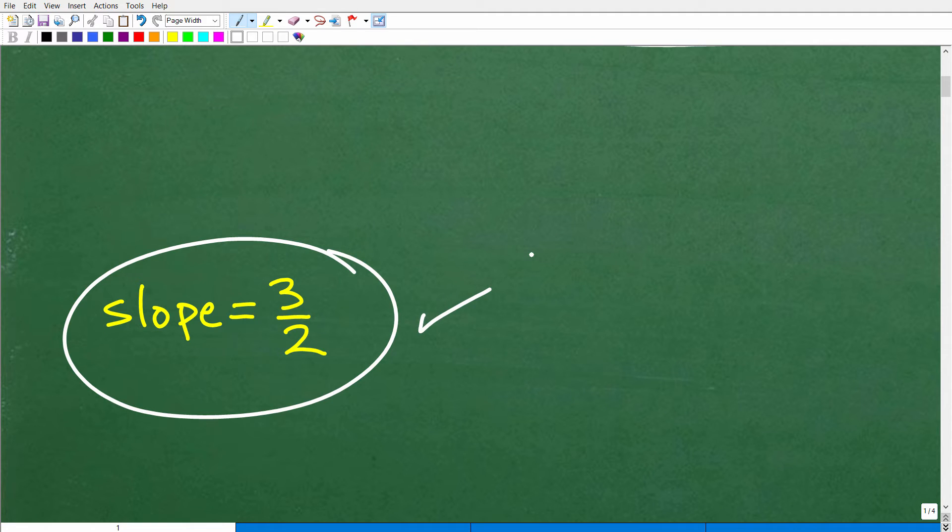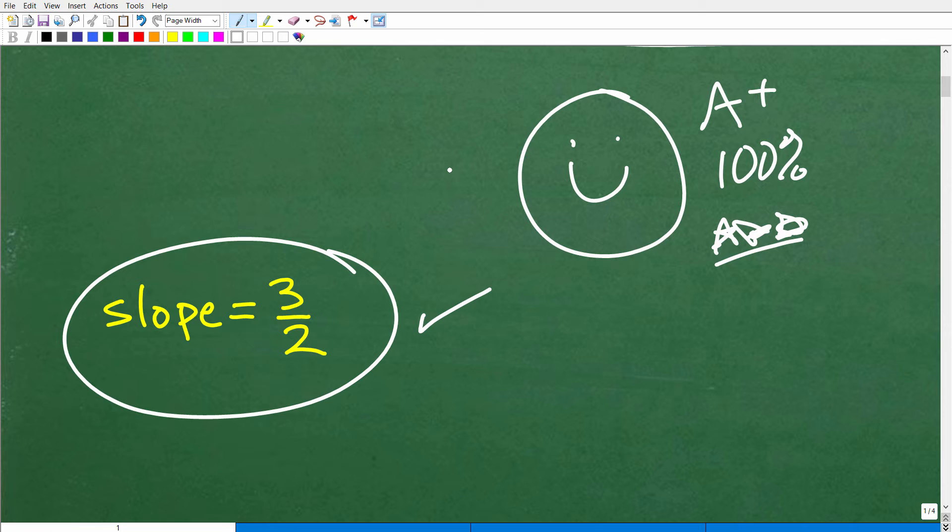Okay, so how did you do? Well, if you got this right, hey, that's really, really good. Matter of fact, definitely good enough for a nice little happy face and A plus, 100%. And let's throw on some nice stars. And of course, if this was a nice quiz or test that you took, kind of just plastered these stars right on your test and be like, hey, awesome job. It looks like you know a little bit about the slope of a line.